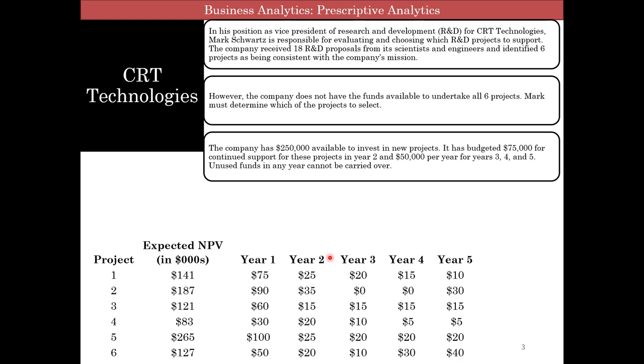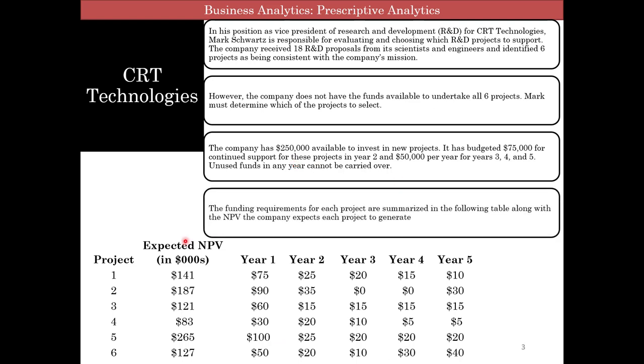So right at the start, $250,000 and then year two, that's right here, then $75,000 and $50,000, $50,000, $50,000. Unused funds, if you don't use the fund, you lose it. So you use it or lose it. And then you have your projects. Here is your expected net present value in thousands and here is your cost given to you in thousands of dollars.